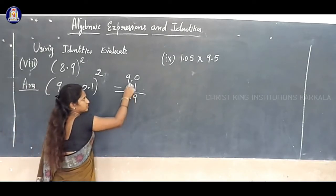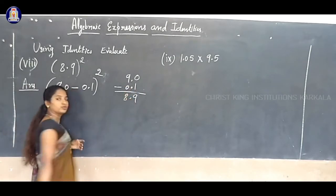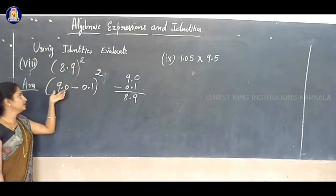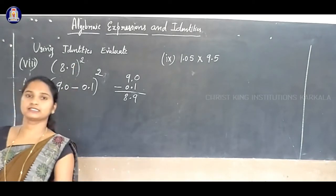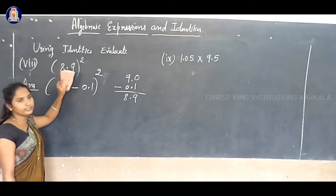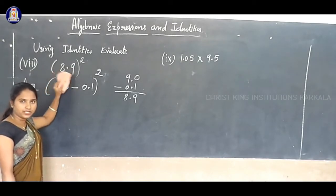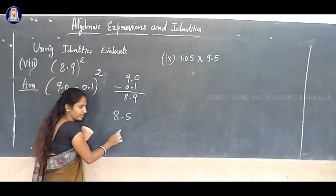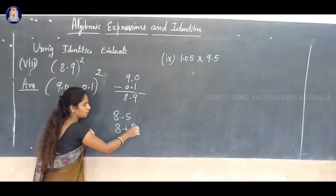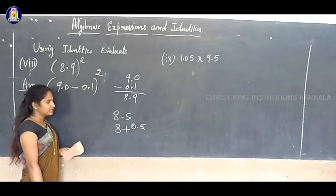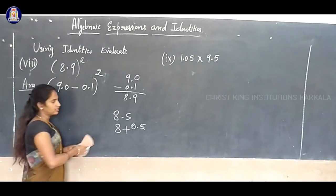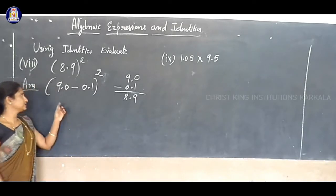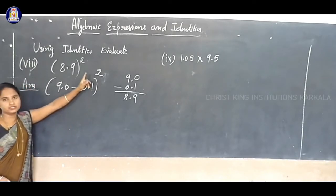So with decimal point, 8.9 can be written as 9 minus 0.1. Suppose you get 8.2, that can be written as 8 plus 0.2. Or 8.5 can be written as 8 plus 0.5. Clear? So here the question is: 8.9 whole square can be written as 9 minus 0.1 whole square.